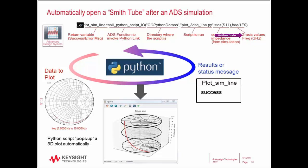That mechanism works like I showed you earlier. It sends the data into Python, plots a 3D Smith Chart. Then a success message, or sometimes some data can come back, too. A success message would come back to ADS.